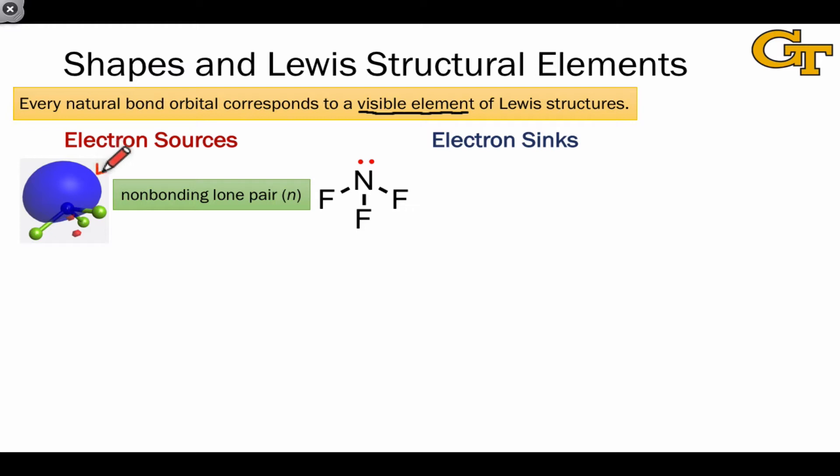The non-bonding lone pair typically has the appearance of a hybrid, as shown here, but it can also have the appearance of an atomic 2p orbital. And we can identify a non-bonding lone pair orbital within a Lewis structure by looking for a pair of electrons on an atom like this within the Lewis structure.